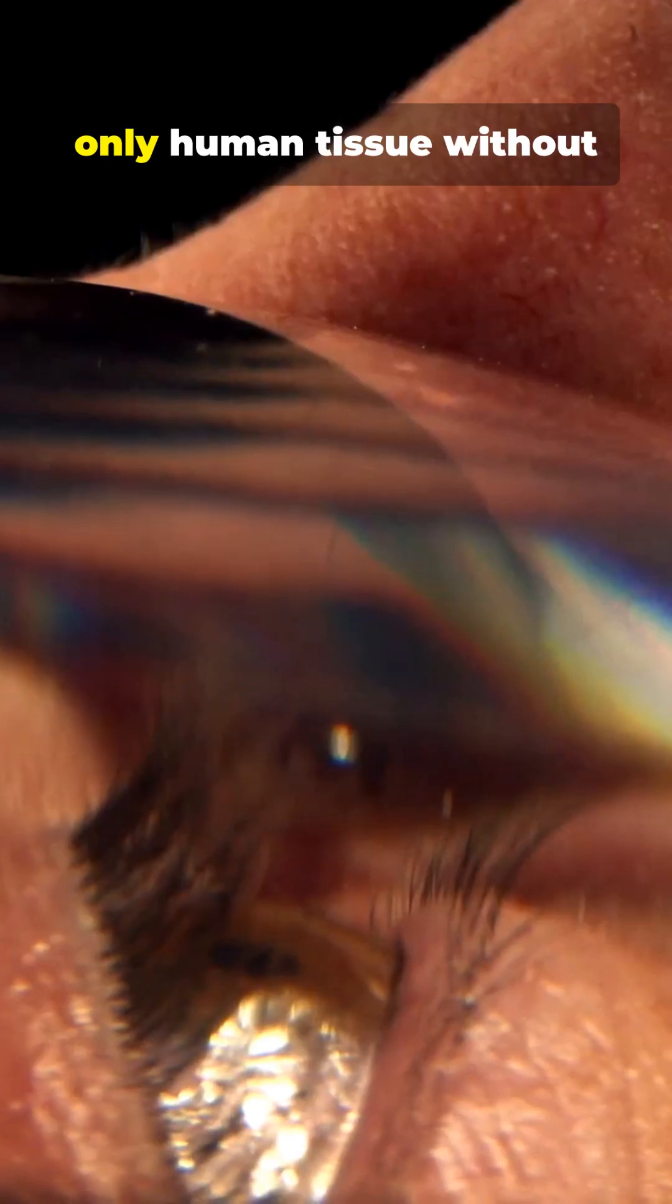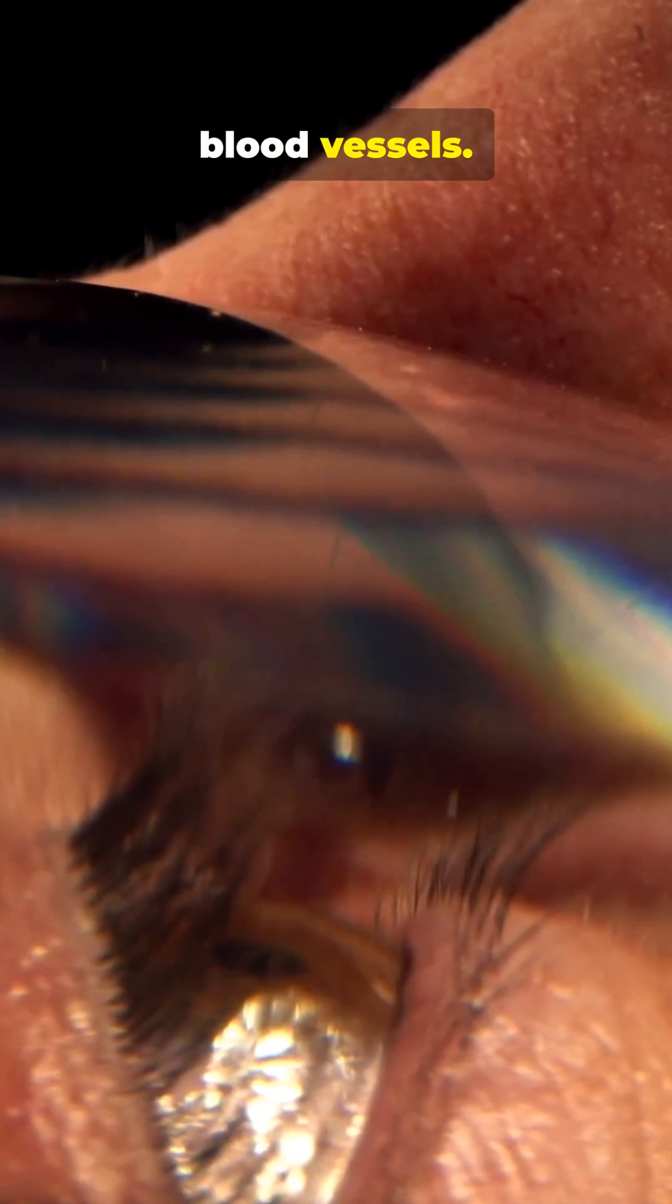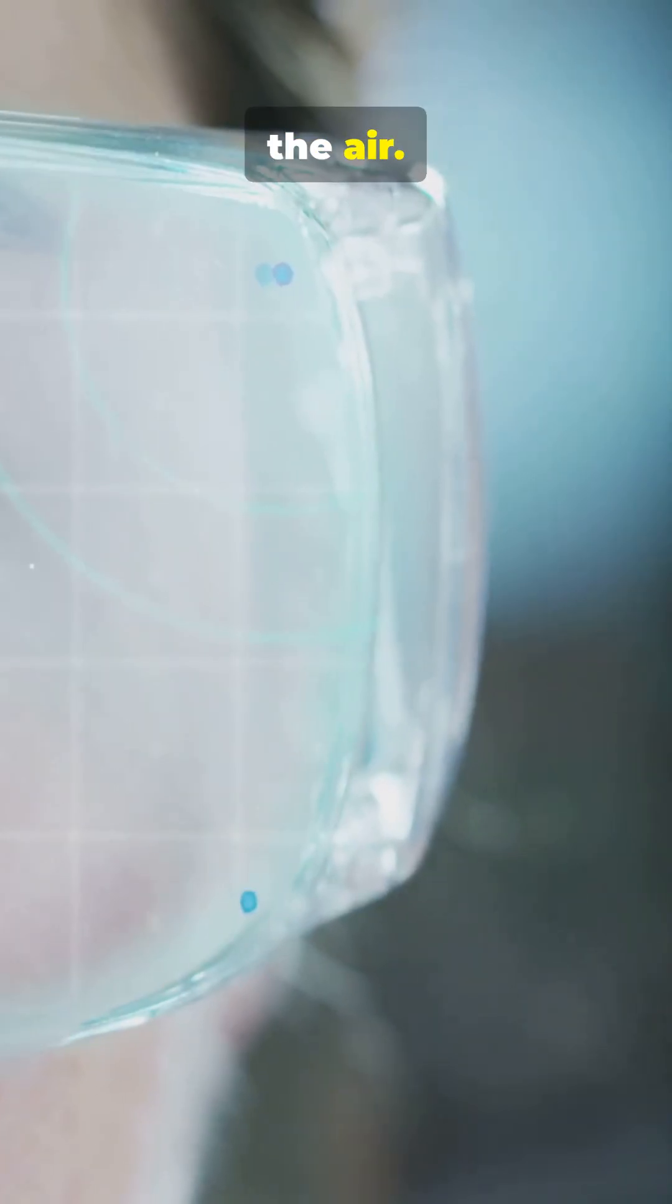Fact 2. The cornea, that clear front layer, is the only human tissue without blood vessels. It gets oxygen straight from the air.